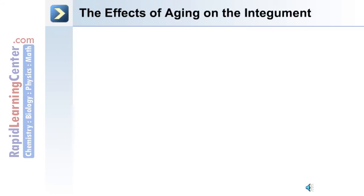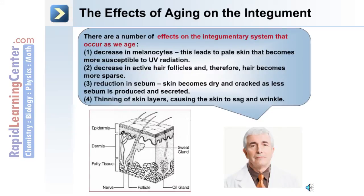As with other tissues in the human body, aging affects the integument. The effects include: first, a decrease in the number of melanocytes, leading to pale skin that is more susceptible to UV radiation. Second, a decrease in active hair follicles and therefore hair becomes more sparse. Third, a reduction in sebum, leading to dry and cracked skin. Fourth, a thinning of the skin layers, causing sagging and wrinkles.